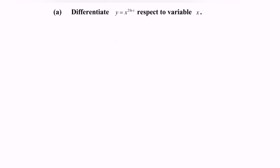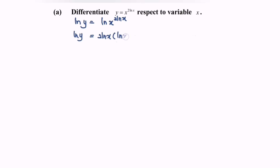First I'm going to modify the situation by taking ln of both sides. By using the properties of logarithms, we can bring forward the exponent 2 ln x, and we will have ln y equals 2 ln x multiplied with ln x. Rewriting the situation, we will have 2(ln x)².